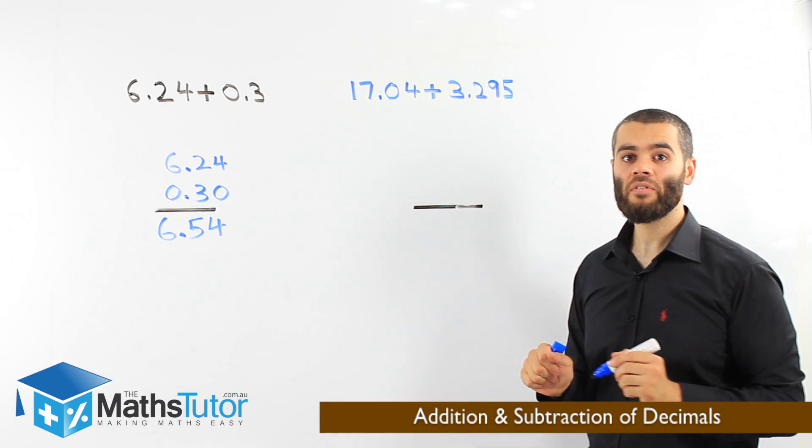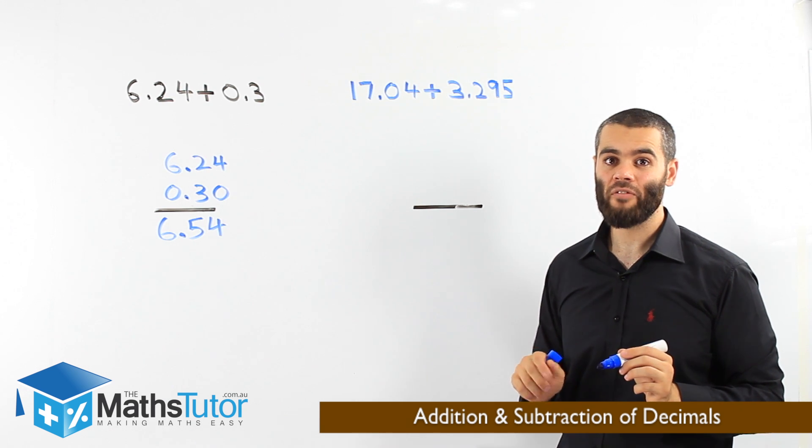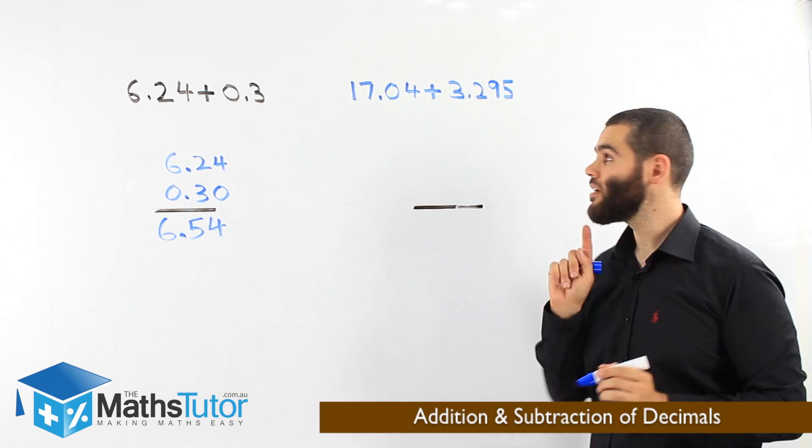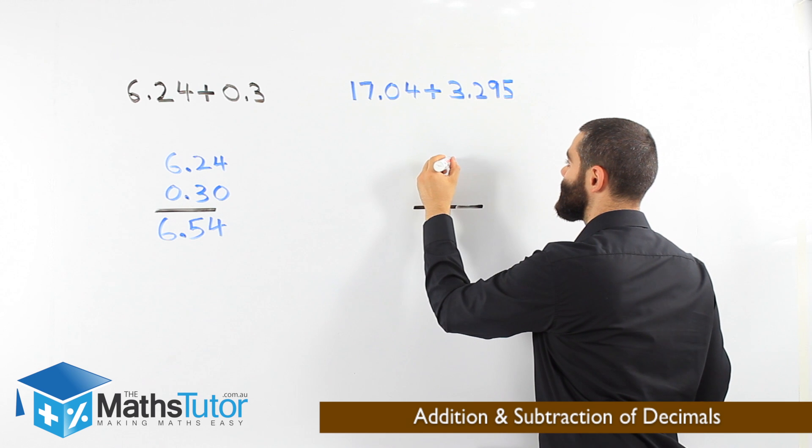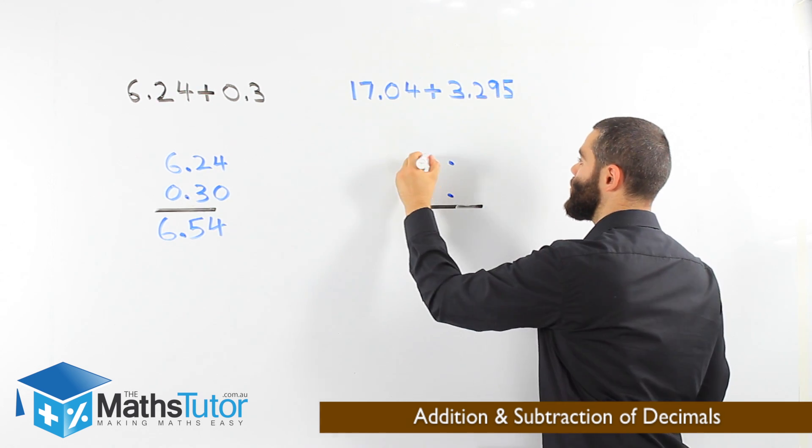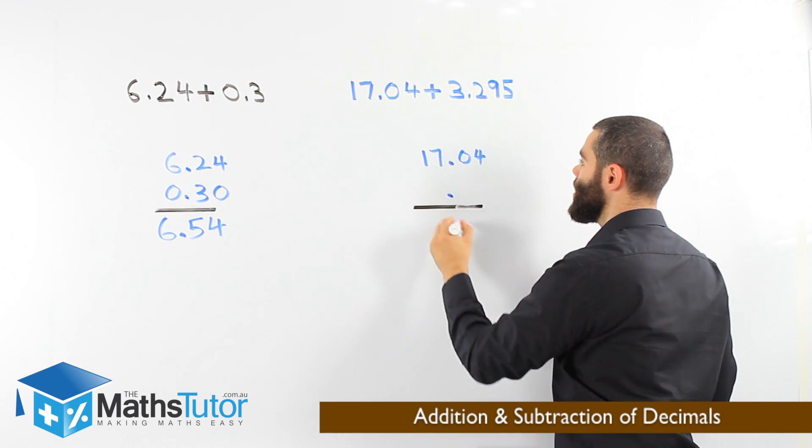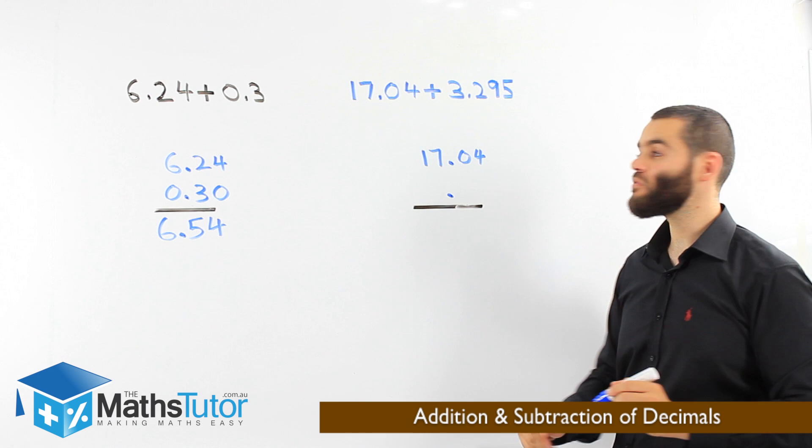Next example. 17.04 plus 3.295. First step, we align up the points. Then we put our numbers in. 17.04. Now that the points align, all the other numbers will start align.